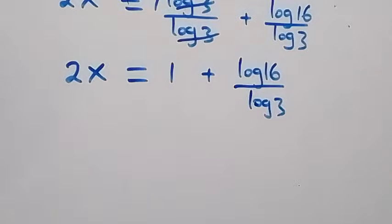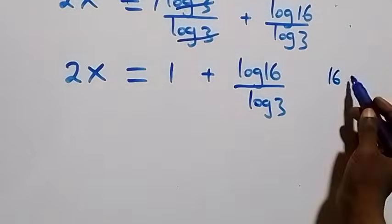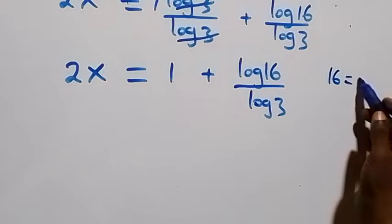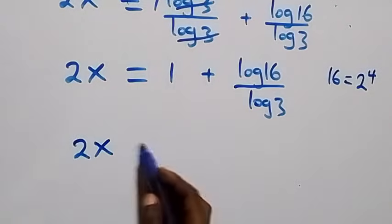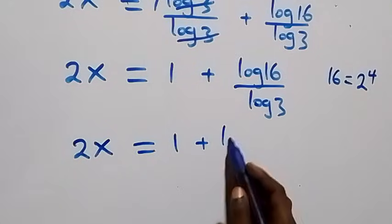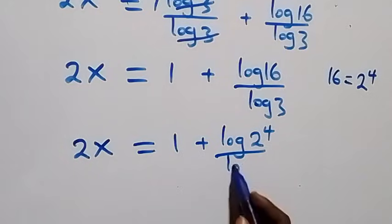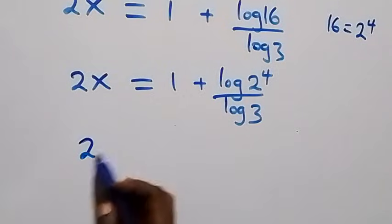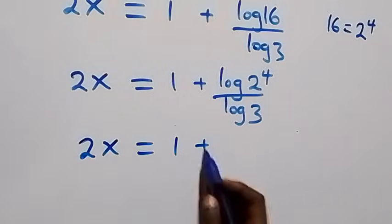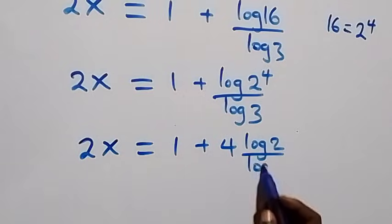We can express 16 as 2 times 2 times 2 times 2, that is 2 raised to power 4. So this becomes 2x equals 1 plus log(2 raised to power 4) over log 3. Applying the power rule of logarithms, 4 comes down, and we have 2x equals 1 plus 4 log 2 over log 3.